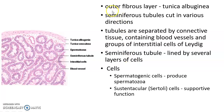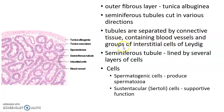The testis consists of an outer fibrous layer called the tunica albuginea. Deep to the tunica albuginea, a number of seminiferous tubules cut in various directions are seen. The seminiferous tubules are separated by connective tissue which consists of blood vessels and groups of interstitial cells of Leydig.